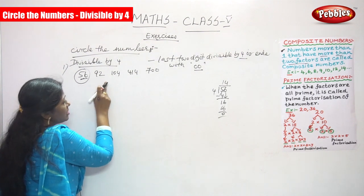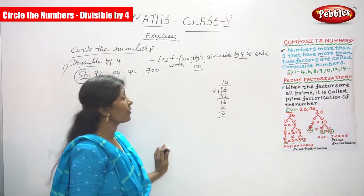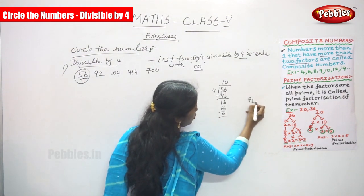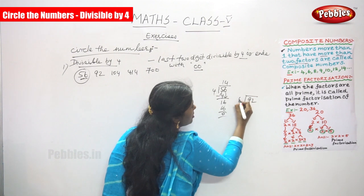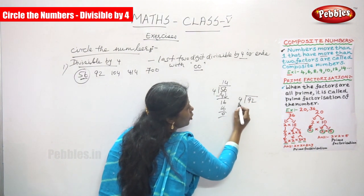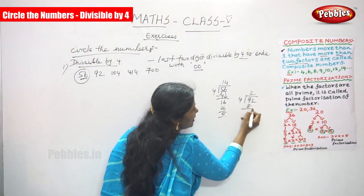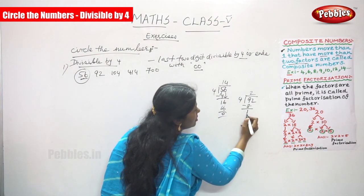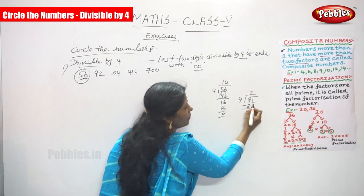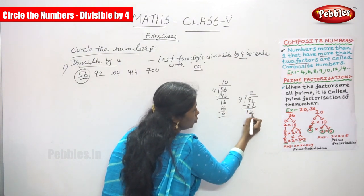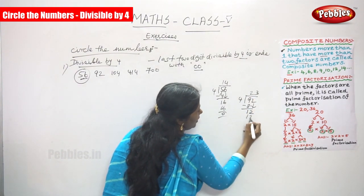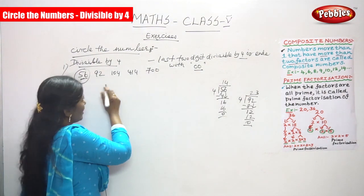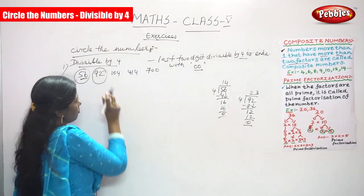The next number is 92. Find out whether this number is divisible by 4. Check: 4 twos are 8, 9 minus 8, the remainder is 1. Since 1 is less than 4, bring down the next digit, which is 2. 4 threes are 12, remainder is 0. So 92 is also divisible by 4.